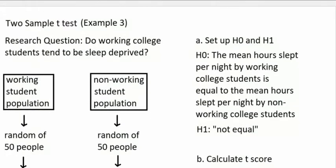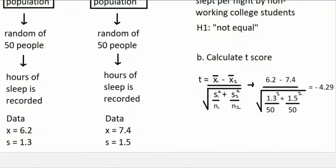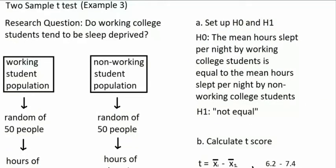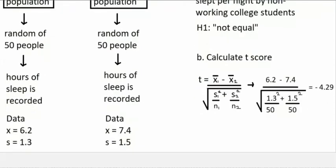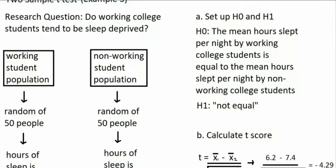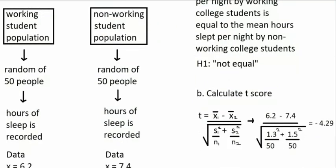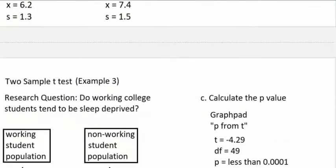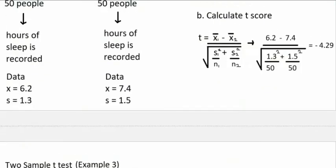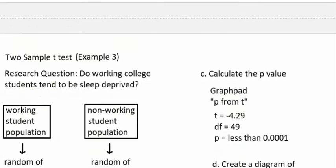Now let's go through examples. The research question is the same as the last video: do working college students tend to be sleep-deprived? We have the mean and standard deviation of sample 1 and sample 2, the null and alternative hypotheses are the same, and the t-score is calculated using the same formula, coming out to negative 4.29. In part c, we calculate the p-value. We go to a p-value calculator available online and enter our t-score and our df.